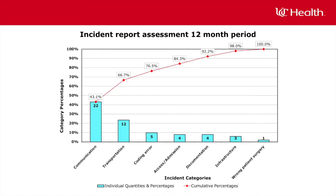The Pareto chart also shows something more important than the most frequent incidents: it shows a single data point for a surgery on the wrong patient. It is important to look at all of the data shown on your Pareto chart. Sometimes you will find a single event that is so important or serious that you should focus your efforts there instead of on the highest occurring events.